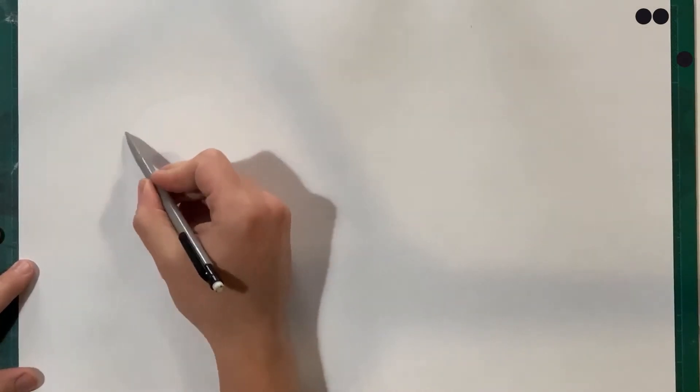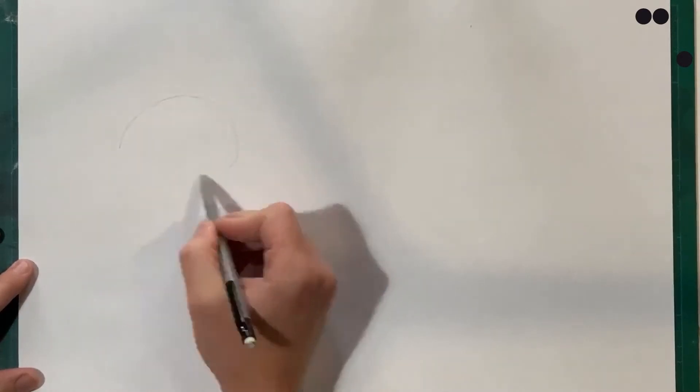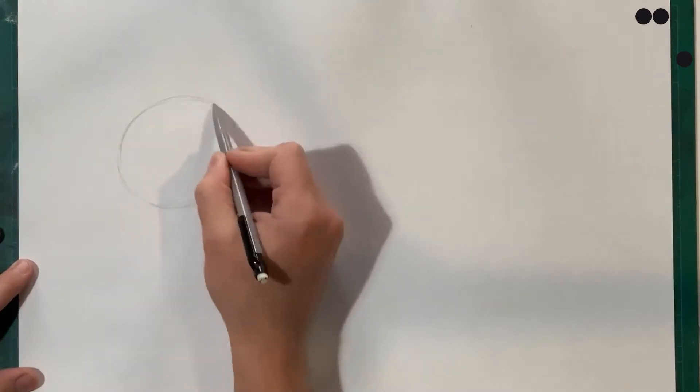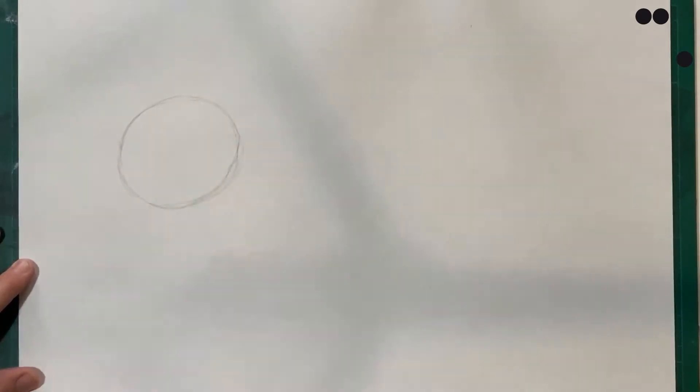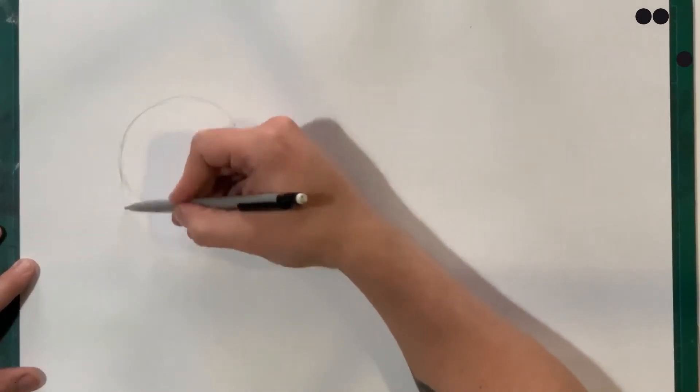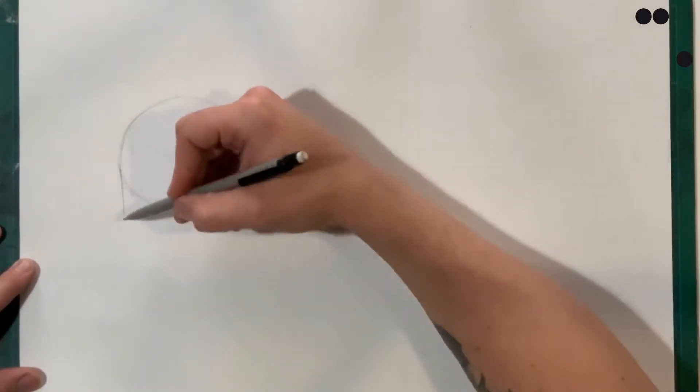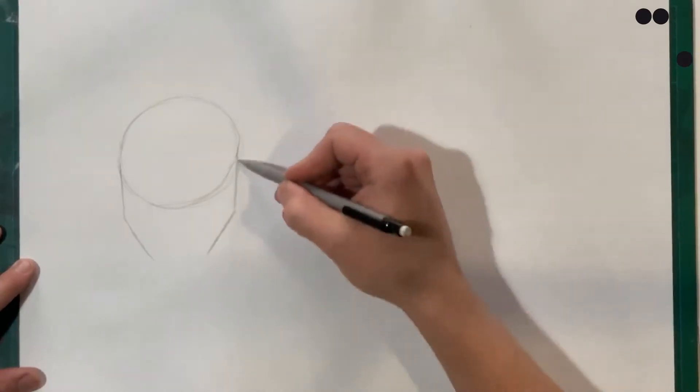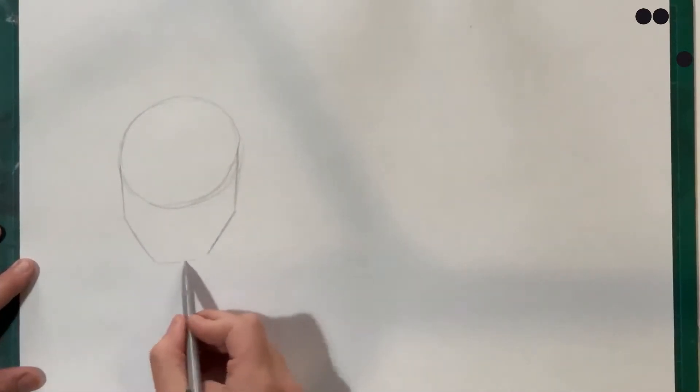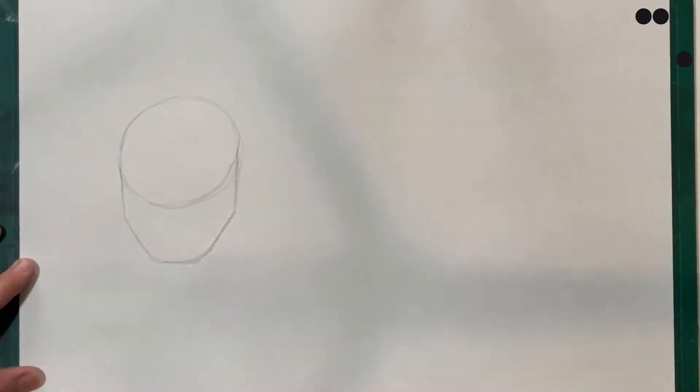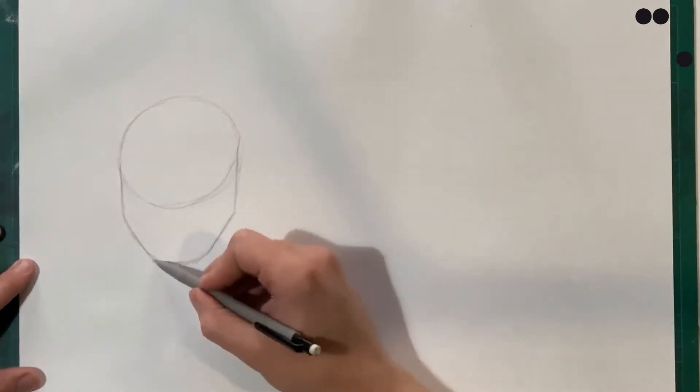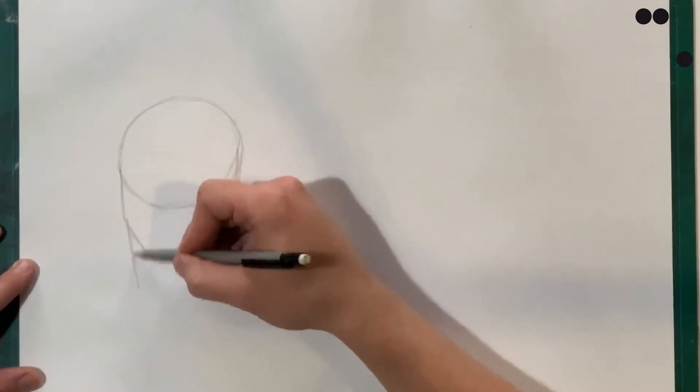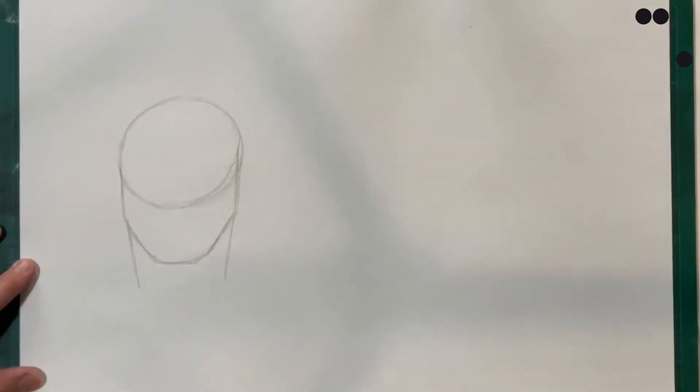First thing to start off with is understanding how we use shapes and lines, and the best way to explain that is to do something that we all have, which is a face. Now the way you construct this and use shapes is we start off with that circle in the center that forms the basis of our head, and underneath that we're going to have this angled yet curved line going down which forms our lower jaw.